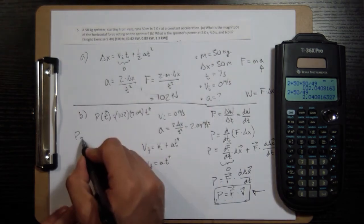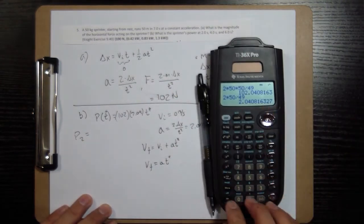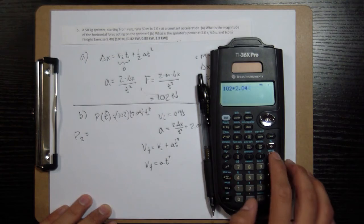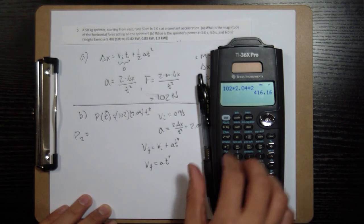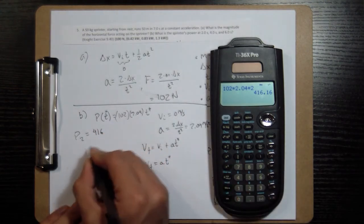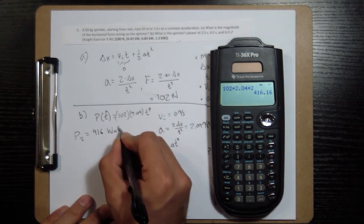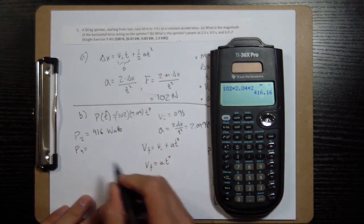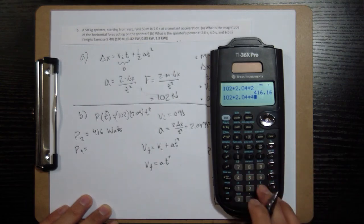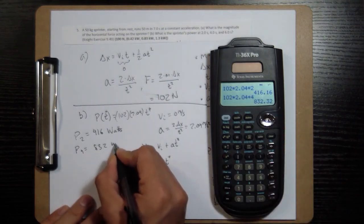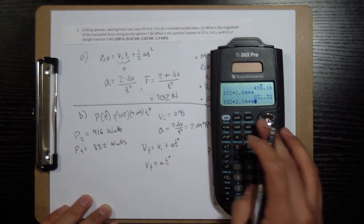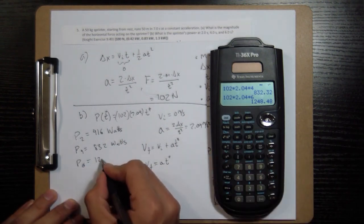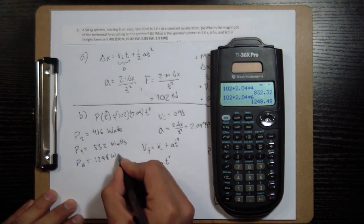So the power at 2 seconds, 102 times 2.04 times 2, 416 watts. And then 4 seconds. Same thing, but we just use 4 instead of 2. 832 watts. And that's 6 seconds. 1248 watts.